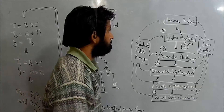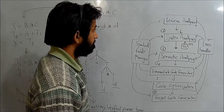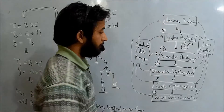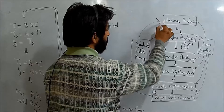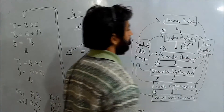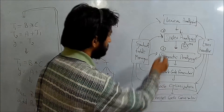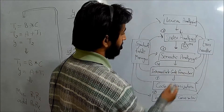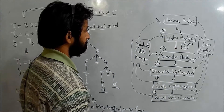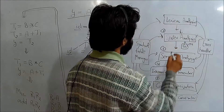In the previous topic, I missed that every phase of the compiler takes support from the symbol table manager and error handler. So every six phases are connected with the symbol table manager and error handler, getting support from all of these.